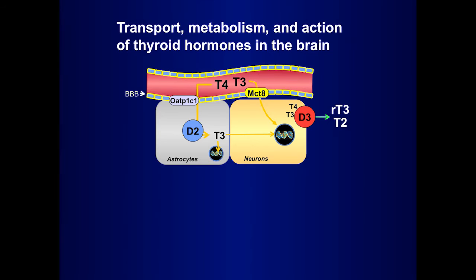There is another transporter in mice and rats, OATP1C1, that John Lazarus also alluded to. It is a specific T4 transporter and allows passage to the astrocyte to form T3. The transfer of T3 from the astrocyte to the neurons is not very clear, and we know that all these transporters are present both in astrocytes and neurons. A combination of these transporters may allow the passage of T3 to the neurons. In MCT8 deficiency, there is no restriction for the passage of T3 from the astrocyte to the neurons.